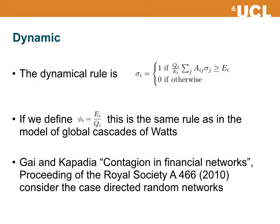If we define phi_i as the ratio e_i over q_i, we can see that this dynamical rule is the same rule we had in the model of global cascades discussed in lecture one by Duncan Watts. The mapping is really there. The difference is that now links have a direction because they connect borrowers to lenders, so the problem here is finding the condition for the existence of cascades on a directed network.